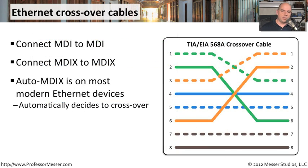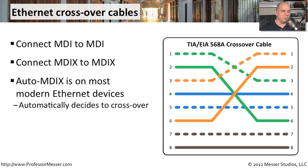If you want to connect a workstation to a workstation, that's MDI to MDI. The challenge is that transmits are on pins 1 and 2 on both sides. You can't use a straight-through cable because you'd be connecting transmit to transmit and receive to receive — nothing would get through. You also need a crossover cable when connecting MDI-X to MDI-X devices, such as connecting one switch to another switch.